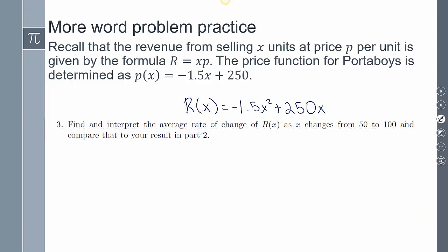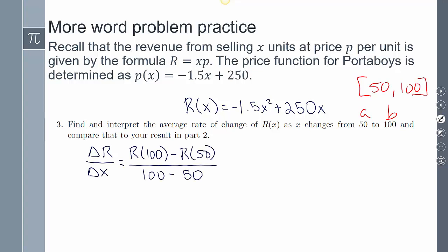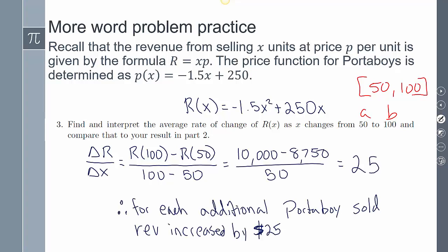The third one says find and interpret the average rate of change of r(x) from 50 to 100. This is now my a and this is my b, so my interval is [50,100]. [r(100) - r(50)]/(100 - 50). Enter that in your calculator, simplify and you get 25. For every additional Portaboy sold within that range, it's an increase of $25. It's actually less, which means to increase the demand, I really had to lower the price.